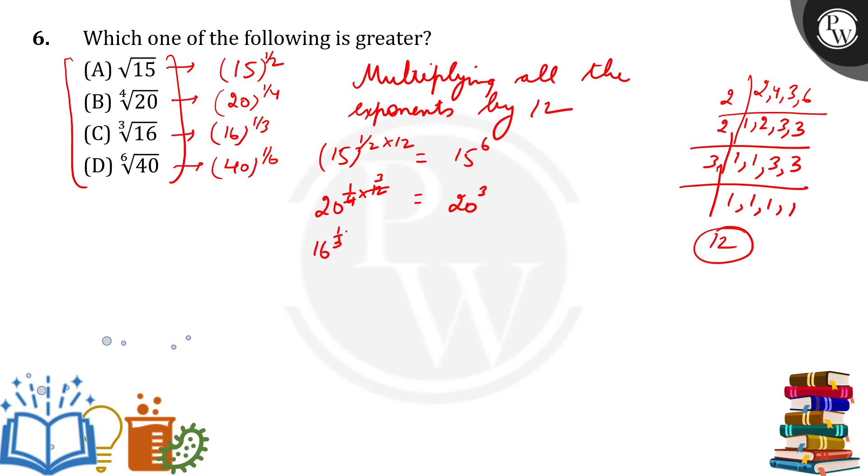16 to the power 1/3 times 12 gives us 16 to the power 4. And 40 to the power 1/6 times 12 gives us 40 squared.